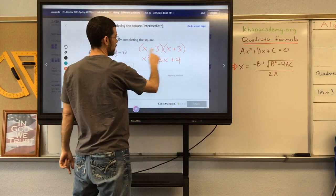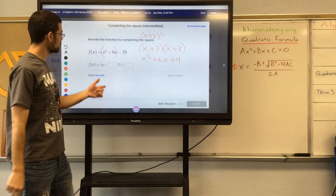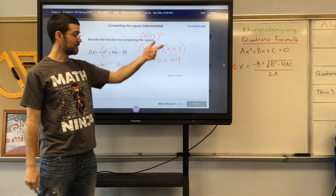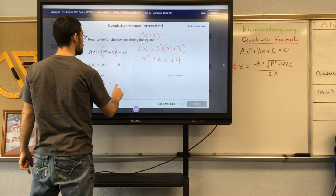This will multiply out to x squared plus 6x plus 3 times 3 is 9. And that's equal to x plus 3 squared. So if I replace this part of my expression with x plus 3 squared, I just added 9 to that side of the equation. That would look like this.